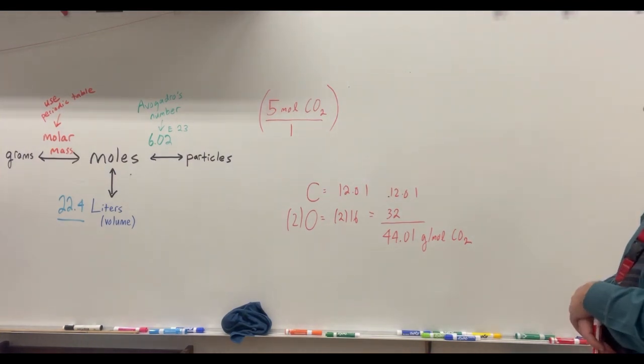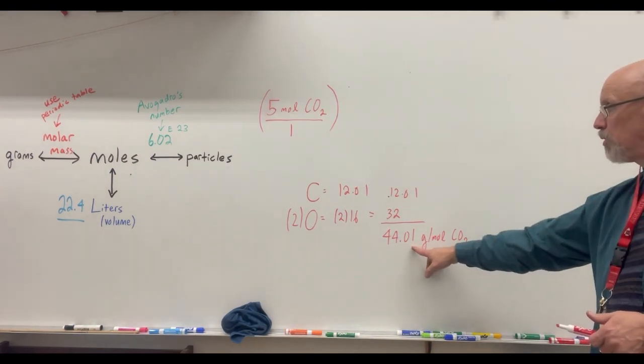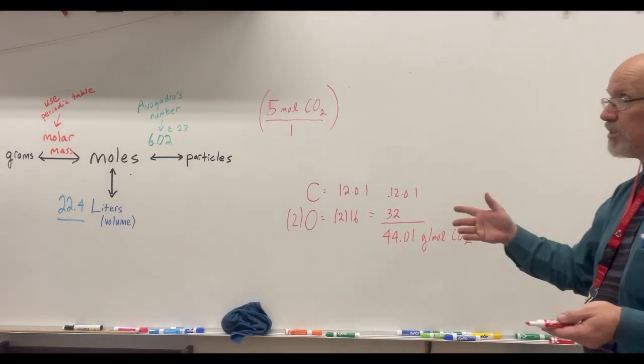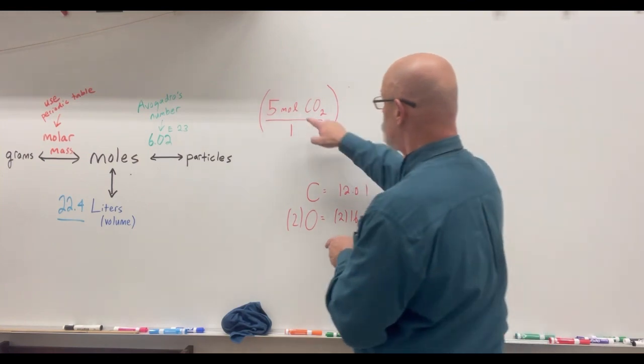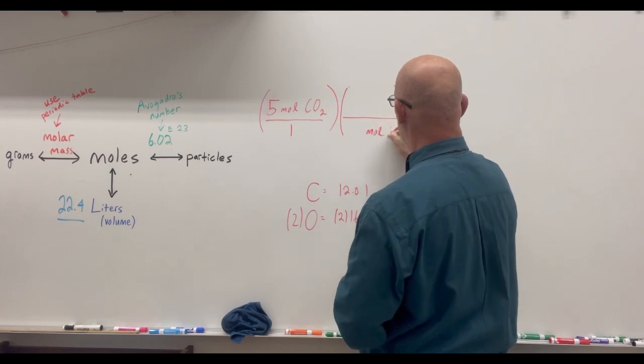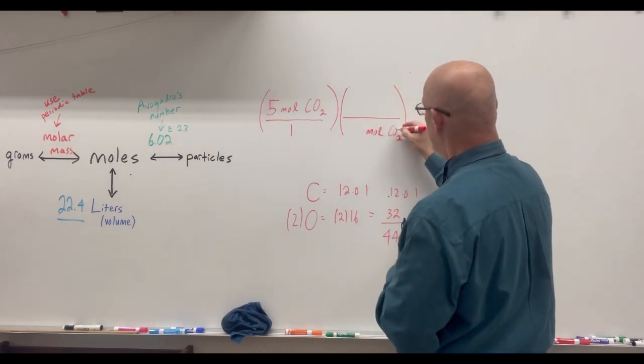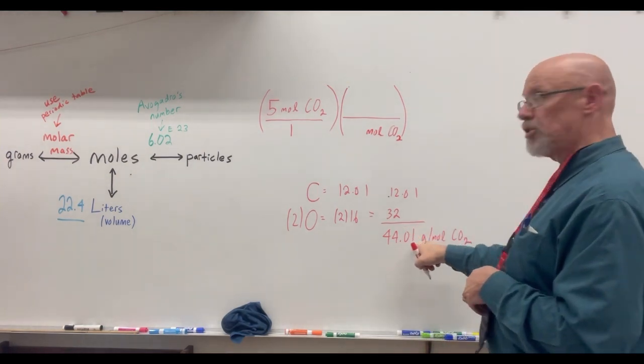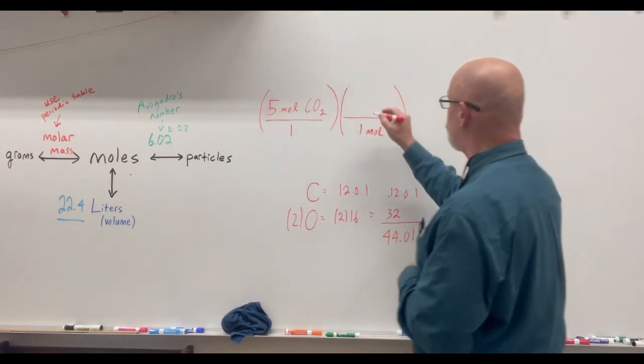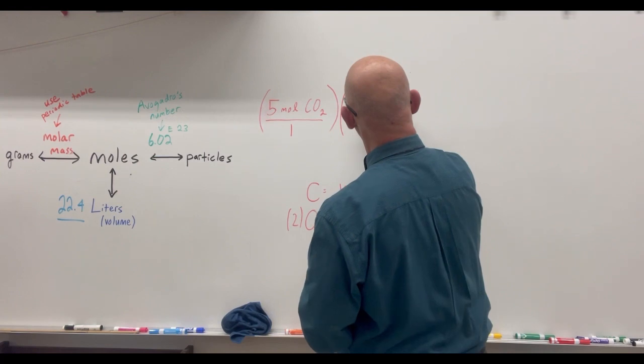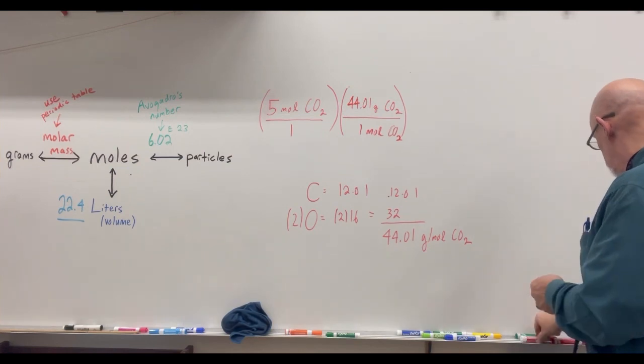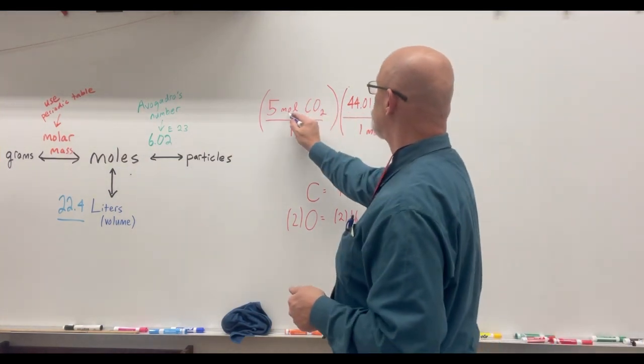Now last time we were given grams and this number 44.01 still goes with the grams. But we're not going to put that number on the bottom because our given isn't grams. Our given is moles. So since we have moles of CO2 on the top we're going to put that moles of CO2 on the bottom. And it's again this is just grams per one mole of substance. So this is going to be one mole on the bottom and we're going to put the 44.01 grams of CO2 on the top.